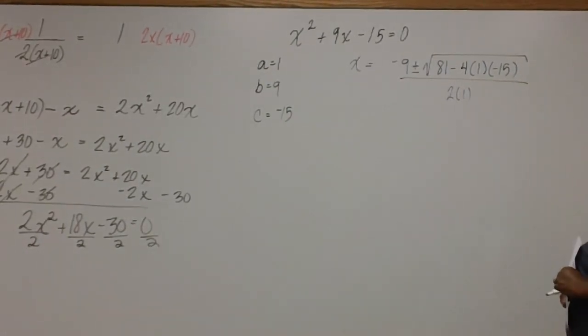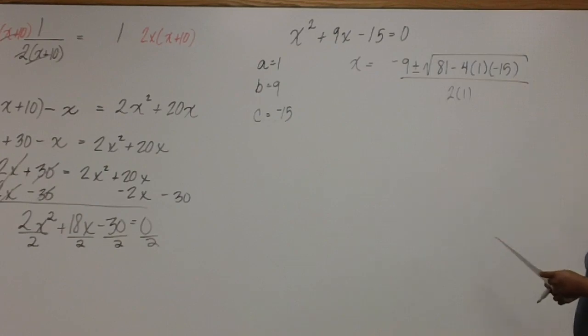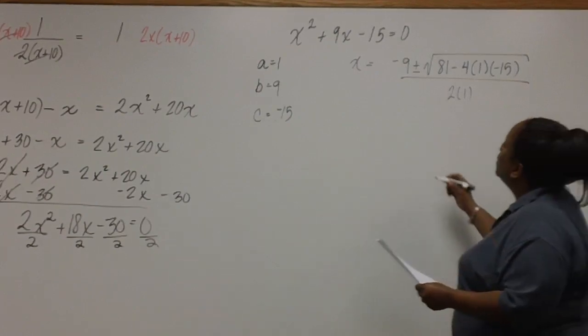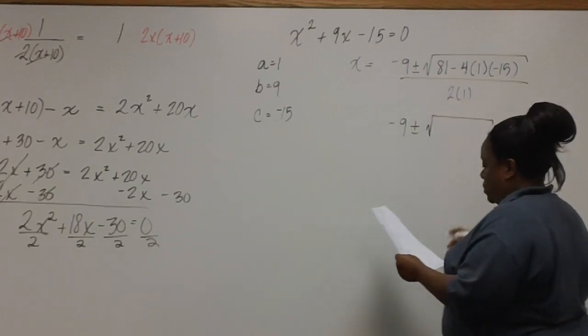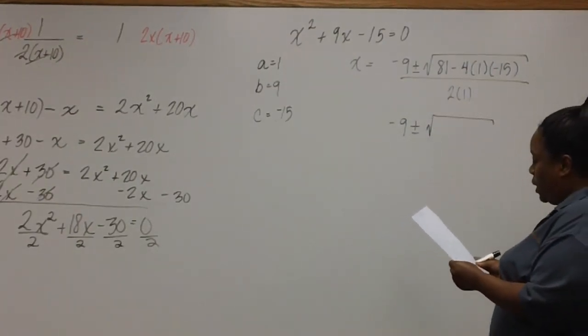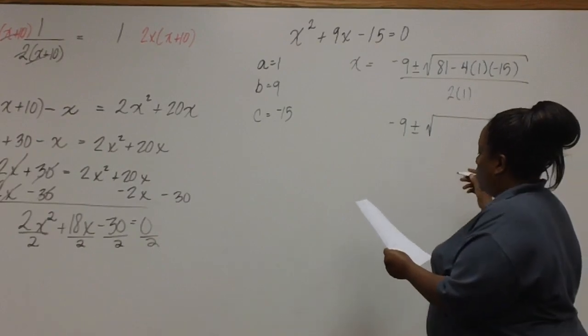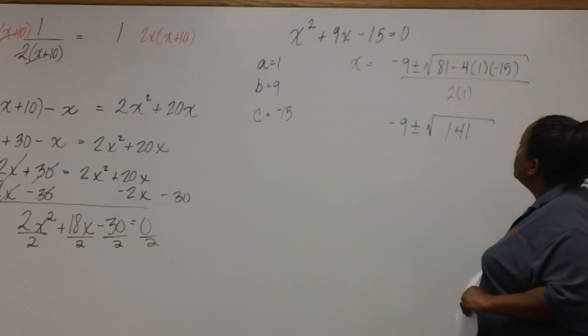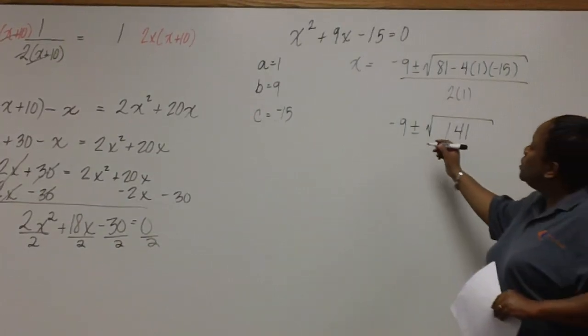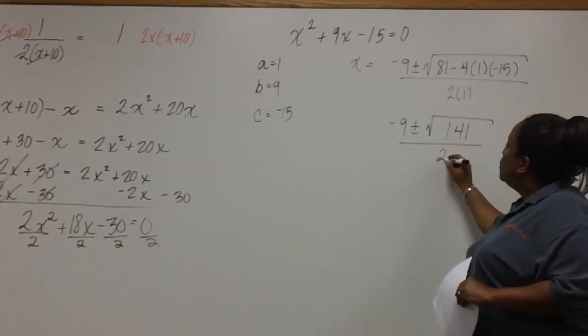Now we need to simplify under the radical. So we have negative 9 plus or minus, and under the radical we're going to end up with 141. And this is all divided by 2.